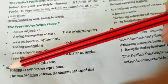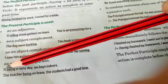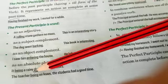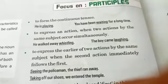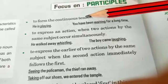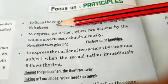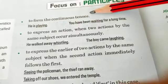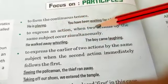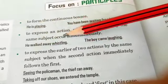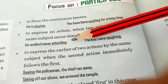Present participle also works as an absolute phrase — a group of words — like 'it being a rainy day, we kept indoors.' It is also used to form continuous tenses, like 'he is playing' or 'you have been waiting for a long time.' It also expresses two actions by the same subject occurring simultaneously.